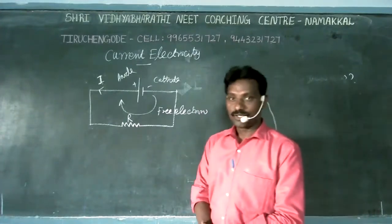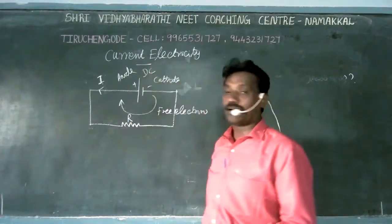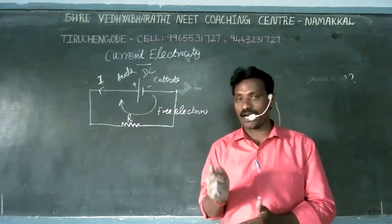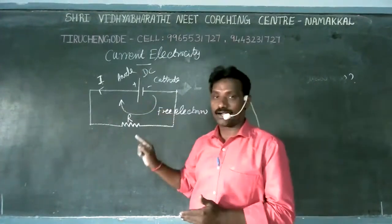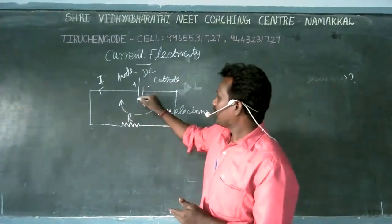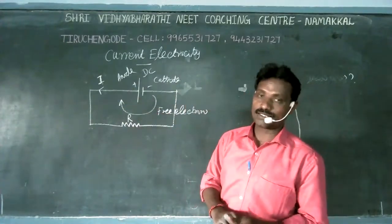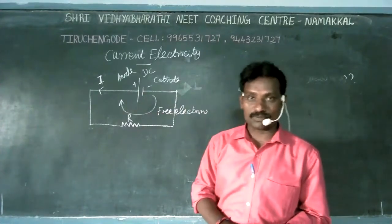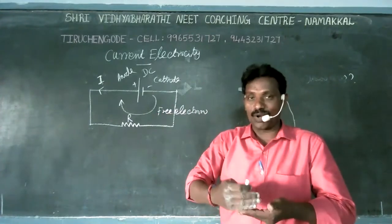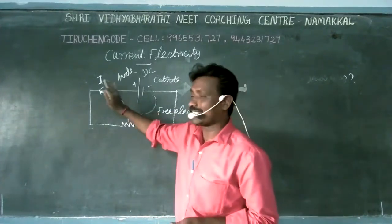This is a circuit with DC current, otherwise called battery current. In the world there are two different types of current: AC current and DC current. DC current is also called steady current. Current is a scalar quantity. The seven fundamental quantities — current, length, mass, time, temperature, amount of substance, and intensity of light — all belong to scalar quantity, not vector quantity.